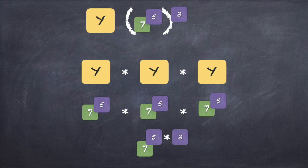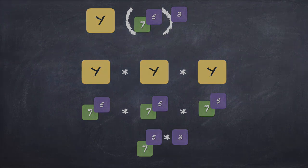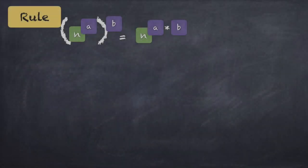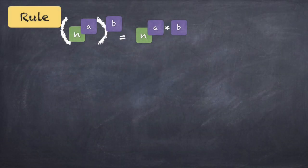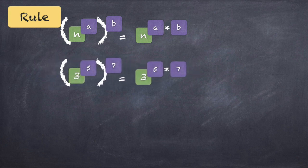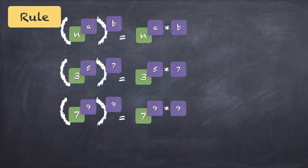So 7 raised to 5 inside the bracket, raised to the power of 3, becomes 7 raised to 5 into 3. The general form is: n raised to a, raised to b, is equal to n raised to a into b. You should try a few more examples. Say 3 raised to 5 raised to 7 — that is simply 3 raised to 5 into 7. Or 7 raised to 9, again raised to 9, gives 7 raised to 9 into 9, which is 7 raised to 81.